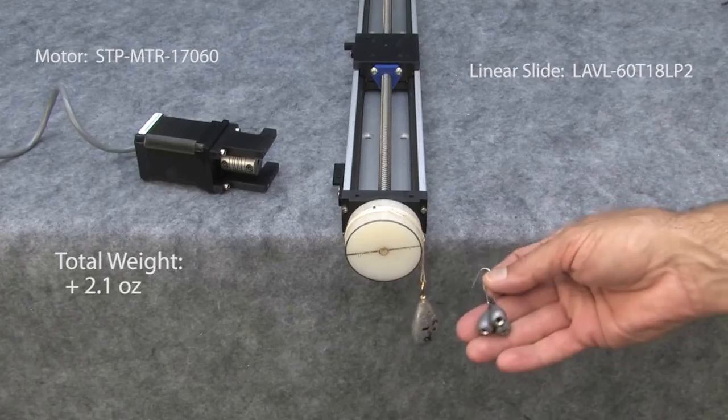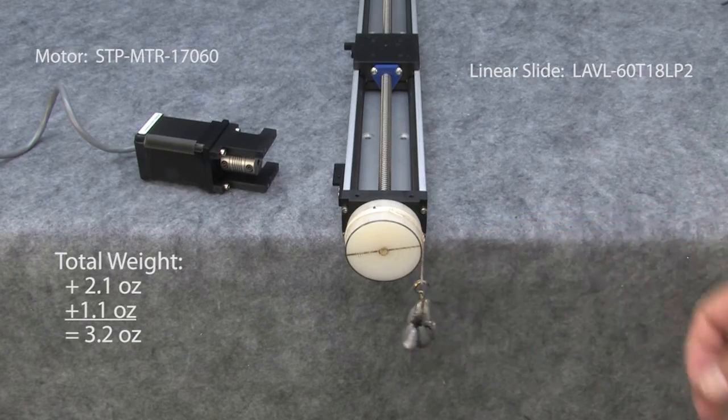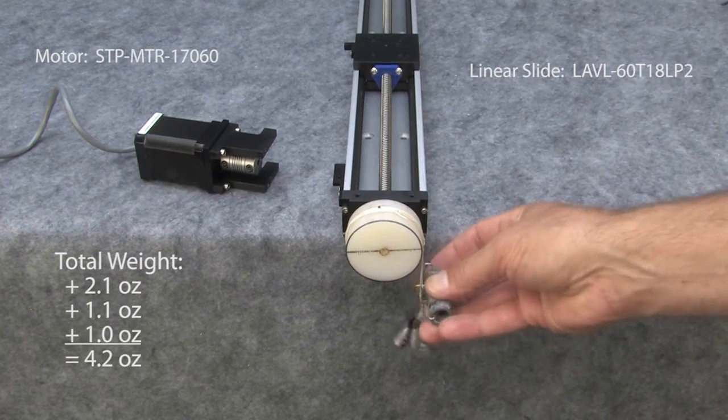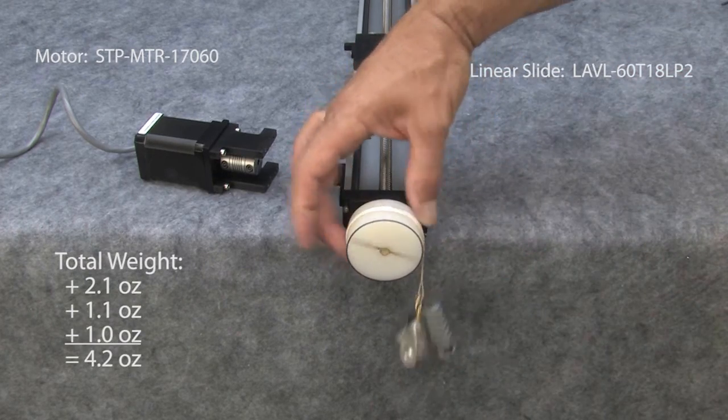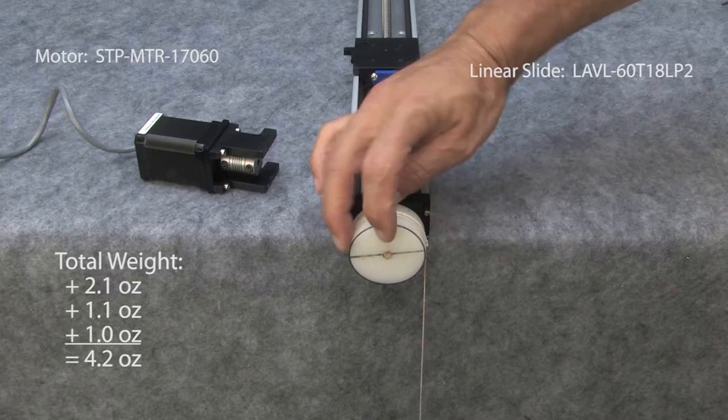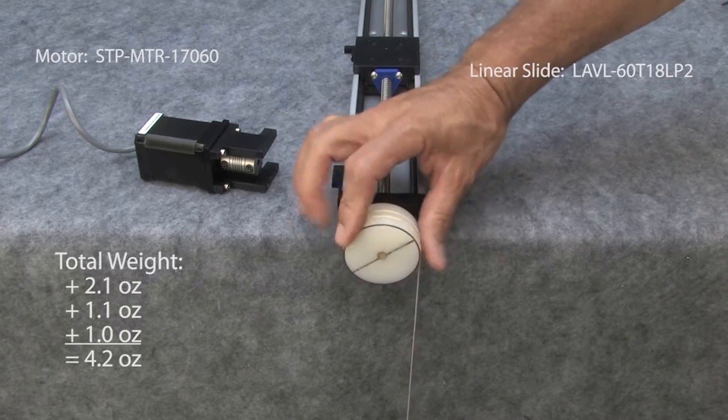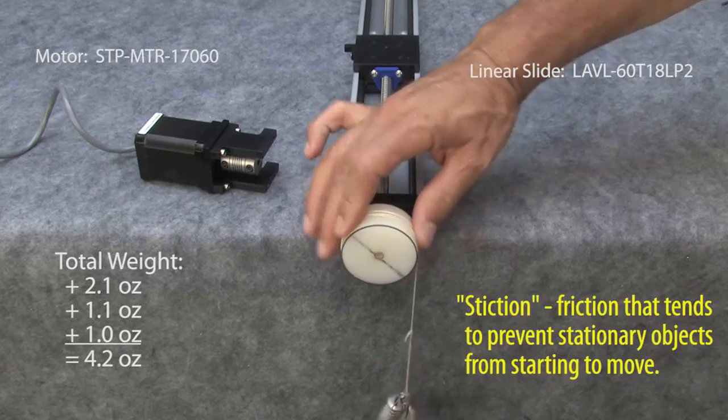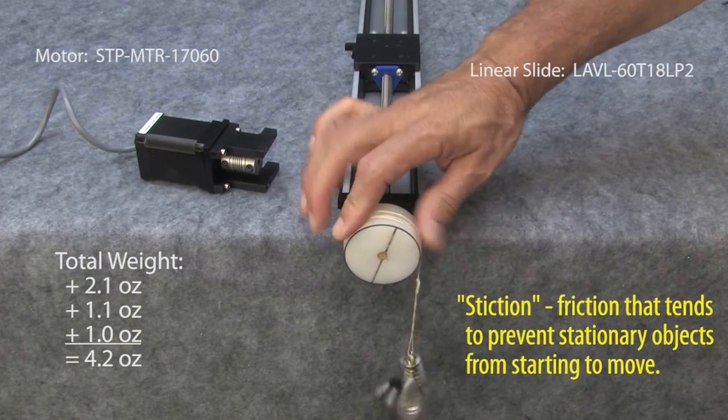Not even close. OK, let's add some more lead weights. Nope. How about a little more weight? Ah, there we go. Now it wants to move. So it took about 4 ounces to get it to move easily once we got past the initial stiction. That's that extra little force required to get it moving.